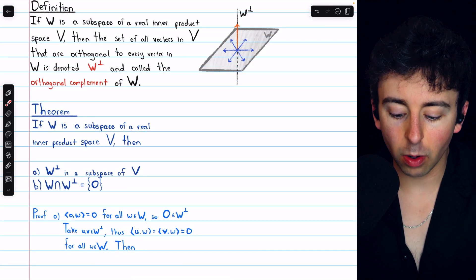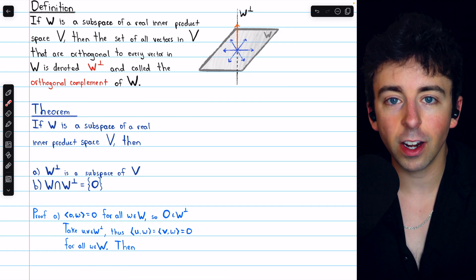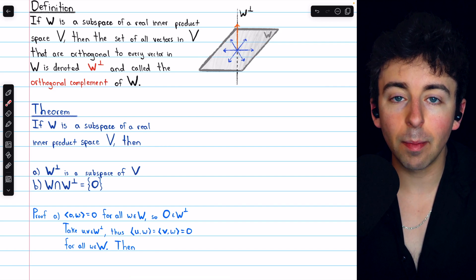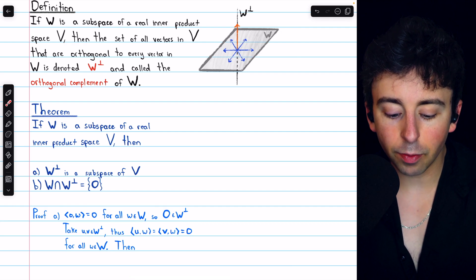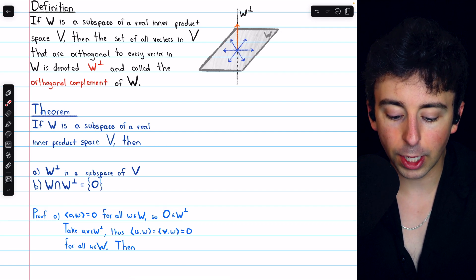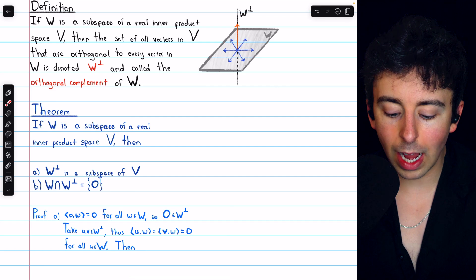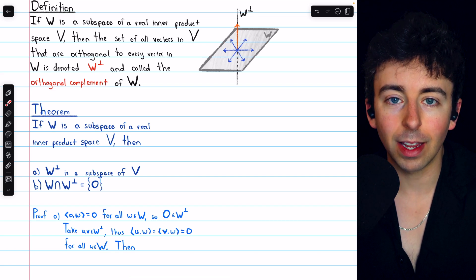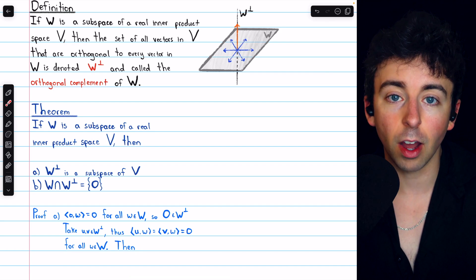All that remains is to show that W⊥ is closed with respect to addition and scalar multiplication. Now that we know W⊥ is not empty, we can take arbitrary vectors from it. Let u and v be vectors from W⊥, and note by definition that the inner product of u with w and the inner product of v with w must both equal zero for any vector w in the subspace W.